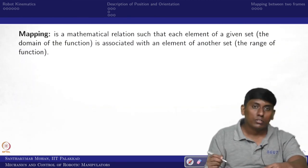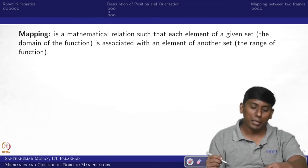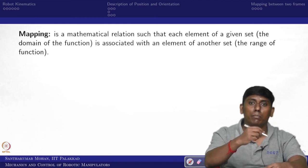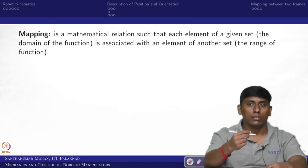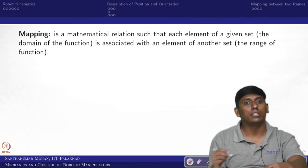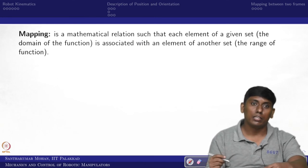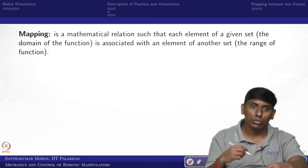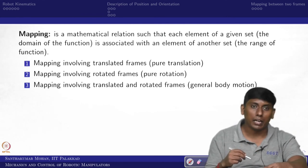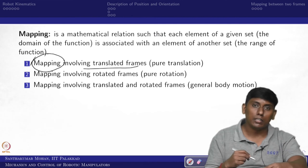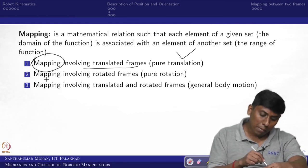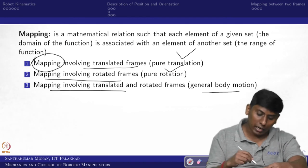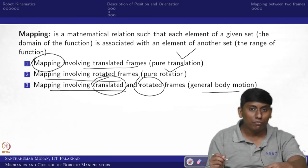Moving further, mapping means relating a mathematical relationship from one body to another. In terms of motion, there are three forms: two translated frames (pure translation), two rotated frames (pure rotation), and a general frame involving both translation and rotation. We are most interested in the general body motion case that combines both translation and rotation.